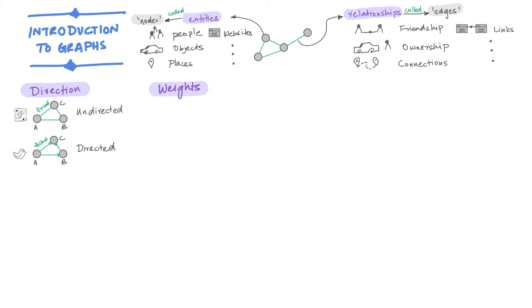Edges can also have additional characteristics that can be represented using weights. Consider a road network between four cities A, B, C and D.